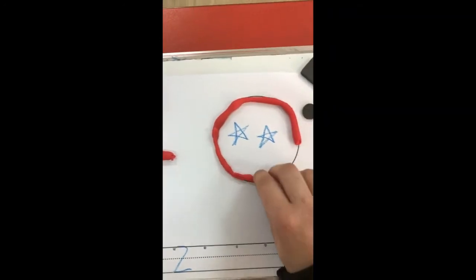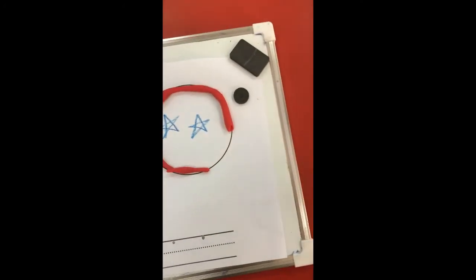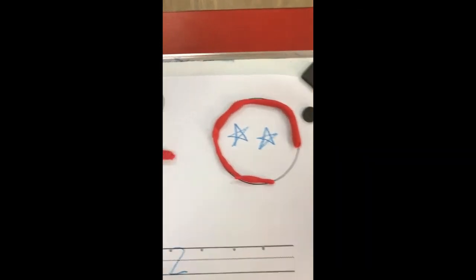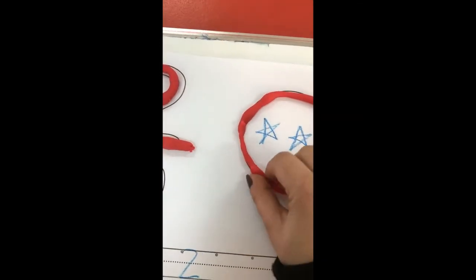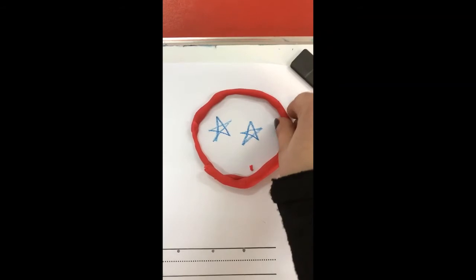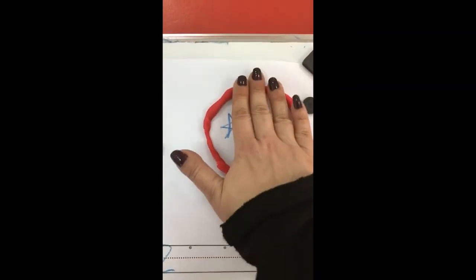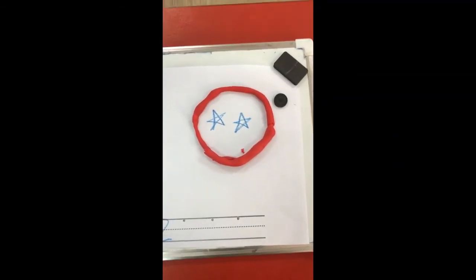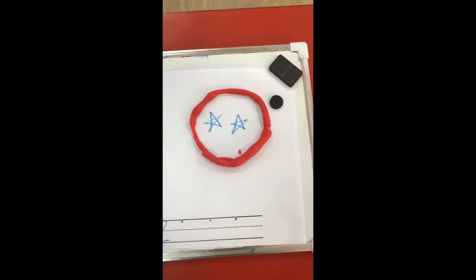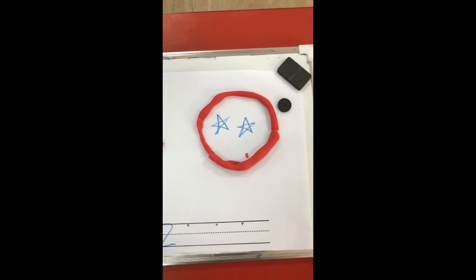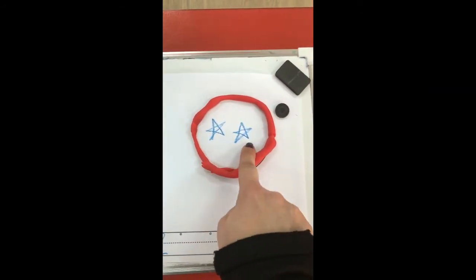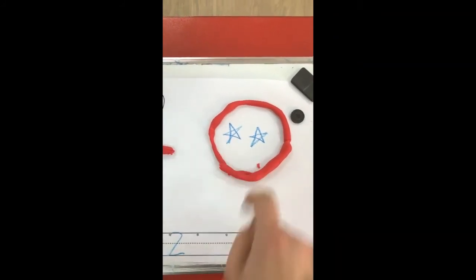Uh-oh. I'm short on Play-Doh. I will get some more. Okay. And now we have a circle. Red circle. And inside the red circle we have two stars. Two stars.